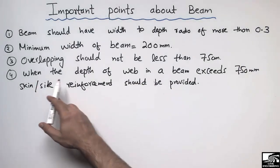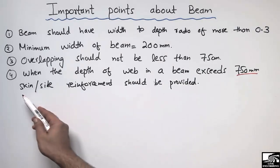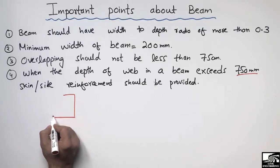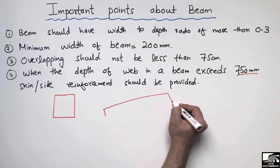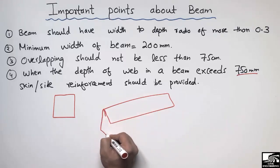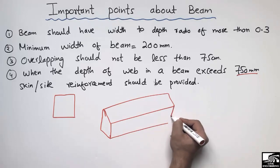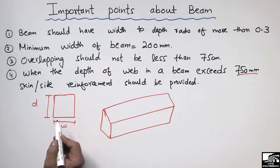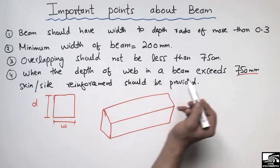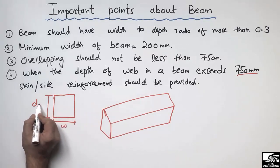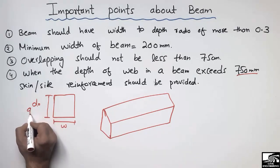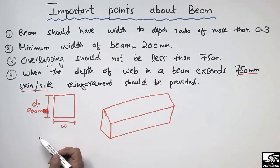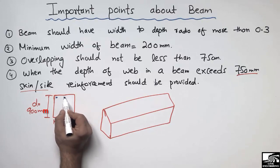The fourth point is that when the depth of the web in a beam exceeds 750mm, skin or side reinforcement should be provided. Consider the cross-section and 3D view of the beam: if the depth d exceeds 750mm — for example, if d is 900mm — we should place skin or side reinforcement in the beam alongside the normal compression and tension reinforcement.